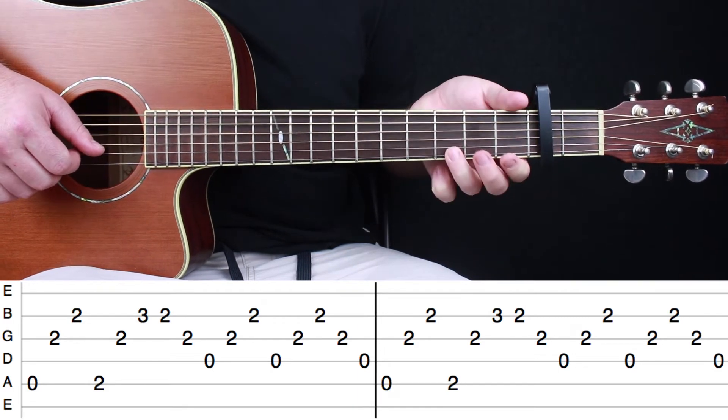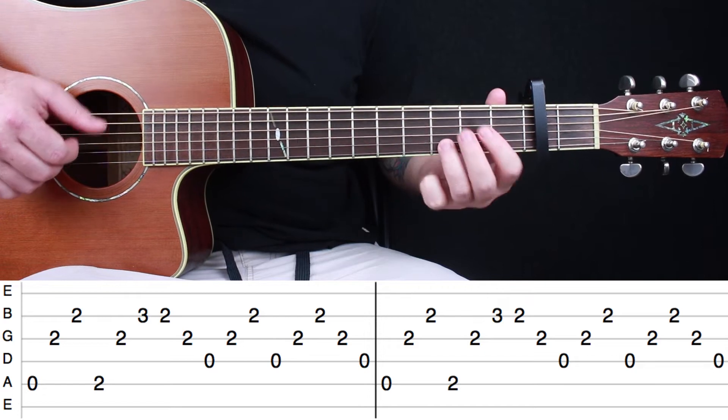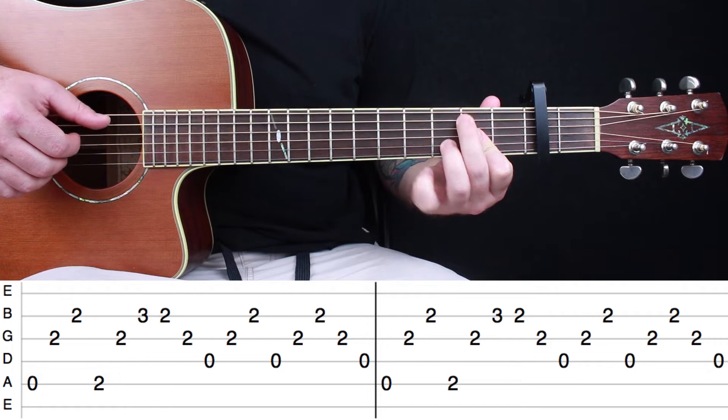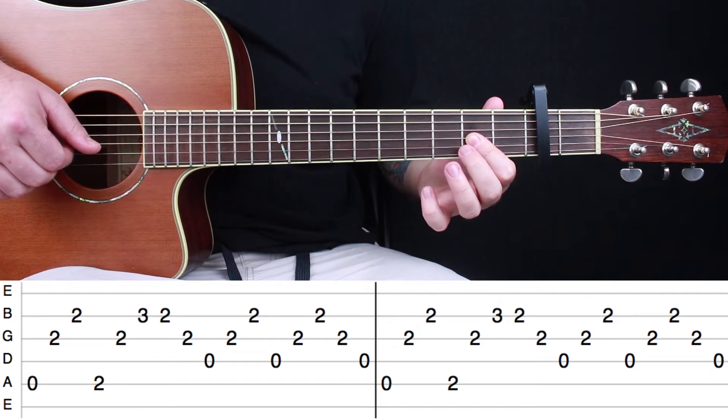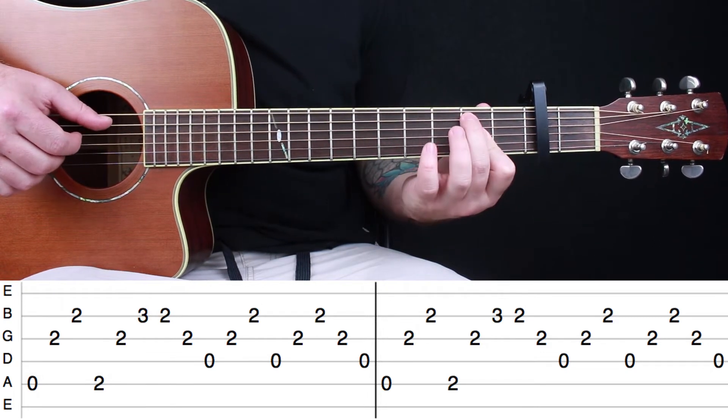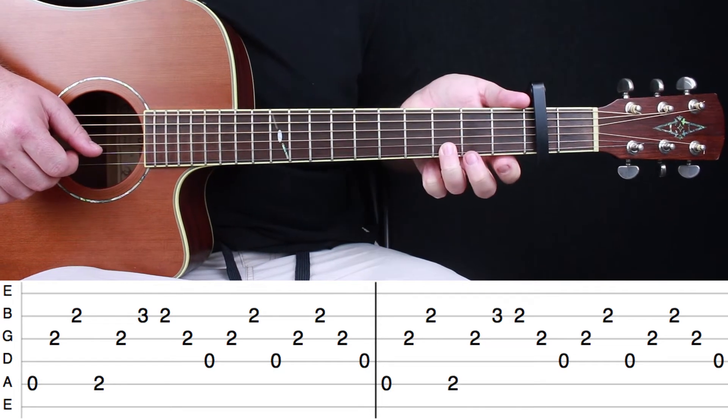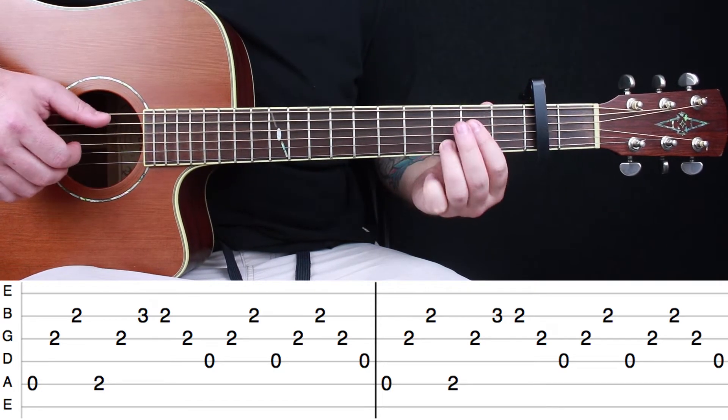Then put your ring finger on the third fret of the B string. So A, G, B, A, G, B with your ring finger on the third fret.